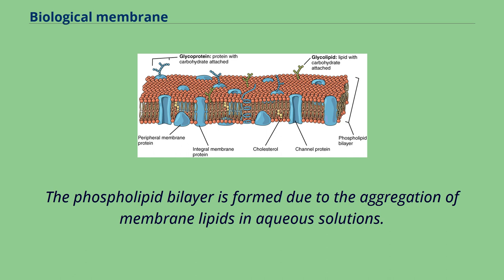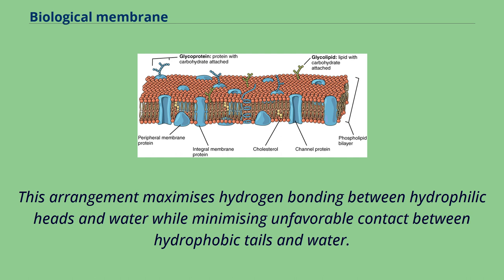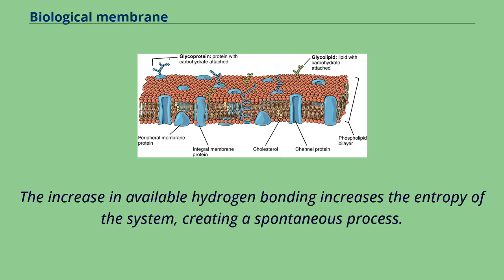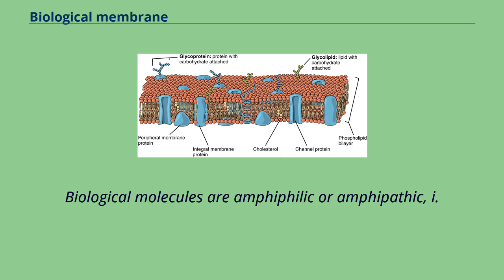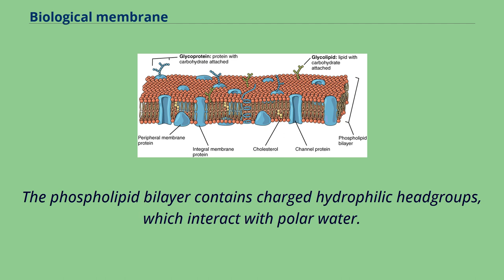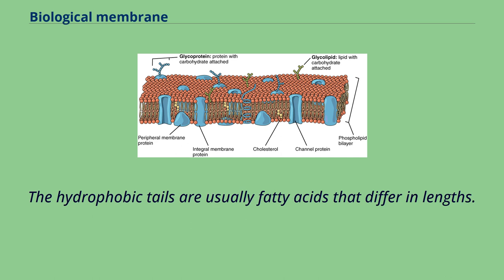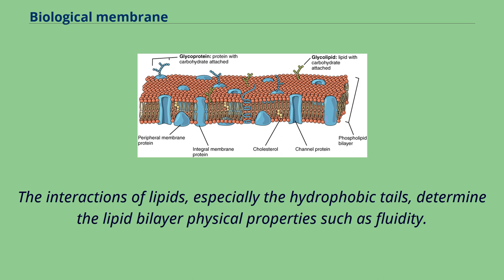The phospholipid bilayer forms due to the aggregation of membrane lipids in aqueous solutions, caused by the hydrophobic effect, where hydrophobic ends come into contact with each other and are sequestered away from water. This arrangement maximizes hydrogen bonding between hydrophilic heads and water while minimizing unfavorable contact between hydrophobic tails and water. The increase in available hydrogen bonding increases the entropy of the system, creating a spontaneous process. Biological molecules are amphiphilic, or amphipathic — simultaneously hydrophobic and hydrophilic. The interactions of lipids, especially the hydrophobic tails, determine the lipid bilayer's physical properties such as fluidity.